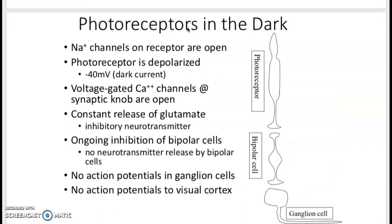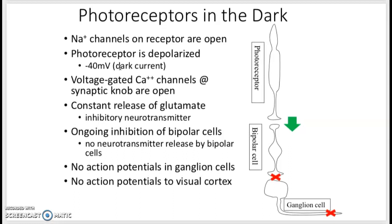So in the dark, what happens? Sodium channels are open on the receptor. That depolarizes the photoreceptor that causes the calcium channels to open, and it releases the neurotransmitter glutamate, which is inhibitory. This inhibitory neurotransmitter that gets released here inhibits the bipolar cells. When bipolar cells are inhibited, they don't produce an action potential, and they don't release any neurotransmitter, so you get no signaling into the brain.